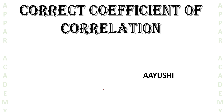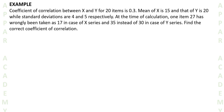Today in this video we will talk about correcting the coefficient of correlation. At the time of computing the correlation, we picked up wrong data. Sometimes we notice wrong values in exam question papers and exam sheets, which causes us to compute the wrong coefficient of correlation. Now we have to correct it. We will directly move on to an example to understand what we are doing.